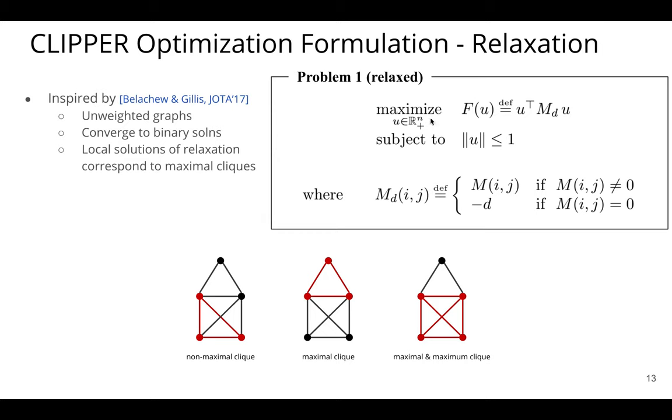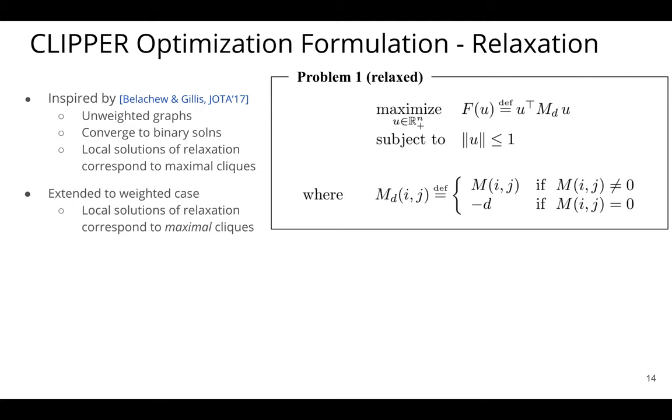And so what we do is we relax it using some continuous relaxation. The observations I would like to point out is that this relaxation was inspired by a 2017 work by Bellachew and Gillis, where they took the maximum clique problem for unweighted graphs and they use this sort of relaxation. And they found that using this relaxation, the solutions converge to binary vectors, just as in the original problem statement. Also, a very important property that they found and were able to show is that local solutions of this relaxation correspond to maximal cliques of the original problem. So we have this nice relaxation that's for unweighted graphs, it has some very nice properties relating to the solutions and correspondences between the relaxed and original versions. And what we did is we took this relaxation and extended it to the weighted case so that we could apply it to our dense clique problem. And we were still able to show that local solutions of this relaxation correspond to the original problem.